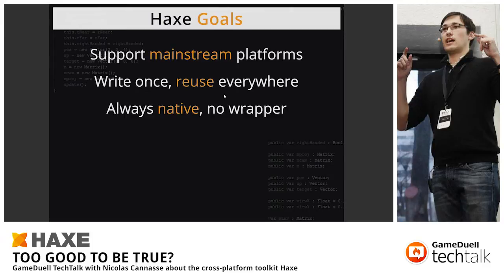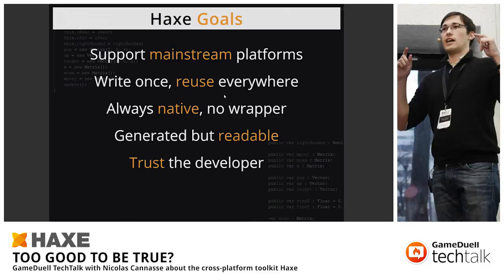We want to be always native — whatever platform you target, there's no wrapper, no overhead that makes the code slow compared to writing directly for the platform. We want the generated code to be readable so you can debug it. One important thing is that we trust the developer. Similar languages protect you against yourself — that's not our philosophy. We say: people that use Haxe get compile-time type checking, but we trust the developer. If you explicitly say you want to do something, we let you do it.